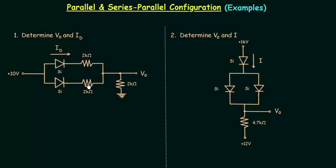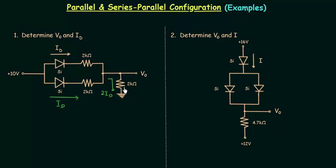If you see these two branches you will find they are the same. In this branch we have one silicon diode and one 2 kilo ohm resistance, and in the second branch also we have one silicon diode and one 2 kilo ohm resistance. So the current in this branch is also equal to ID, and the current through this resistance is equal to twice ID. You can easily find this using KCL, Kirchhoff's current law.